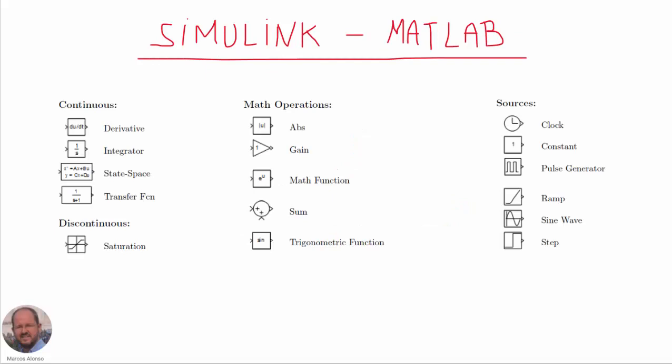The idea is to create a library with some control components similar to those that we can find in Simulink MATLAB. So in Simulink we can find blocks for doing the derivative, integrators, saturation. We can also find blocks for different functions like absolute value, gains, math functions, clocks, constant, and so on. In this video we are going to see how to create some of these components for our library in order to make easier the simulation of control circuits using LTSpice. And in the future we can add more components to our library if necessary.